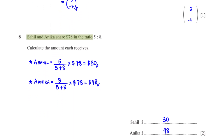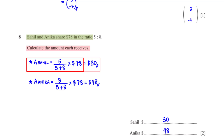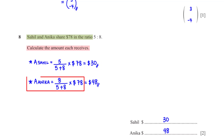Sahil and Anika share 78 dollars in the ratio 5 to 8. Calculate the amount each receives. To get Sahil's amount, we divide his ratio share of 5 by the total ratio of 13, then multiply by 78 dollars, giving 30 dollars. To get Anika's amount, we divide 8 by 13 and multiply by 78 dollars, giving 48 dollars.